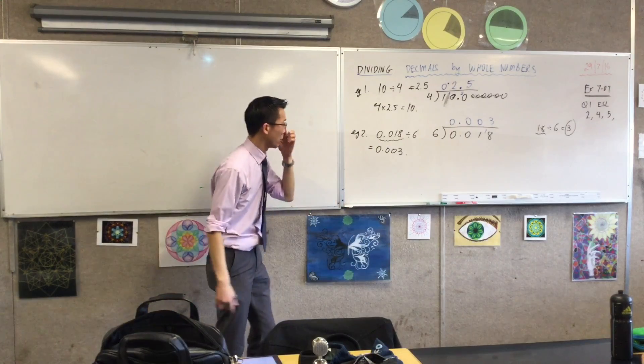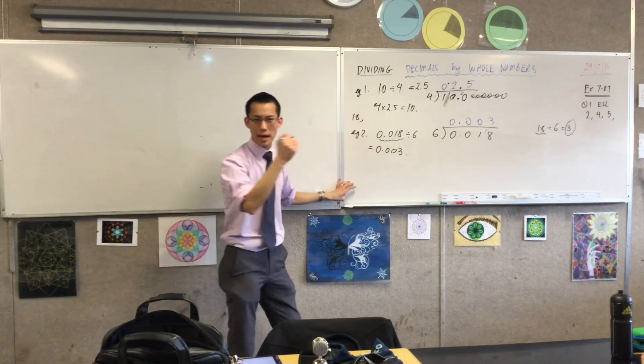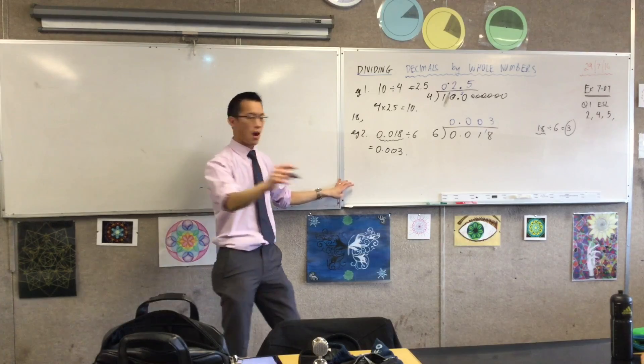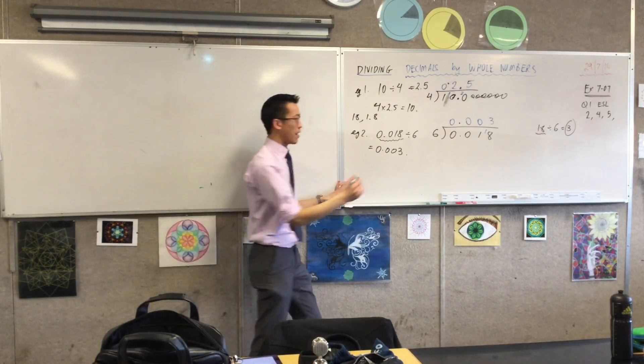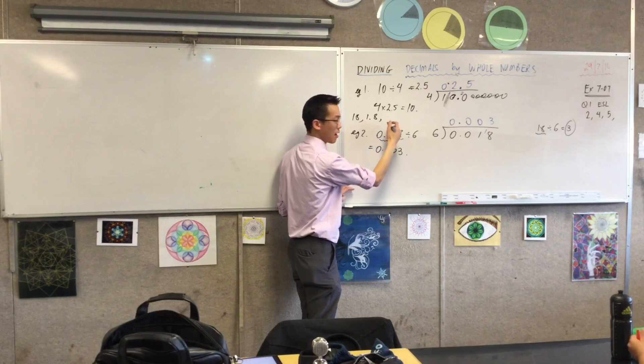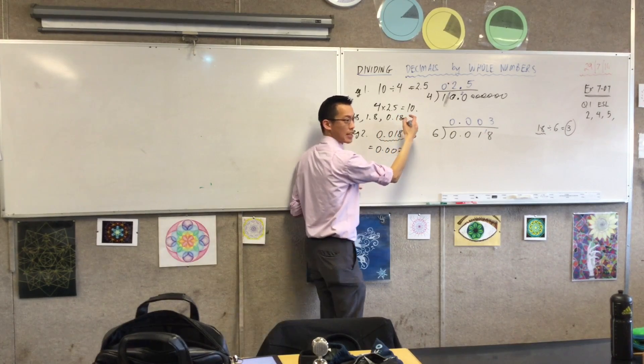I can actually do the division, right? But here's what I'm going to do. I'm going to say 18, if I divide it by 10 once, I'll get 1.8. Yes? If I divide it by 10 again, I'll get 0.18. And if I divide it by 10 one more time, I get 0.018.